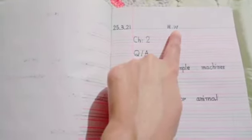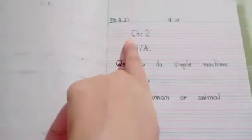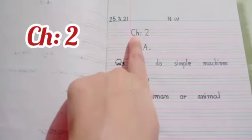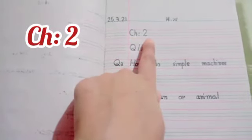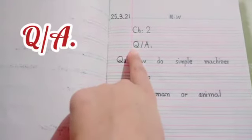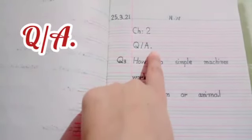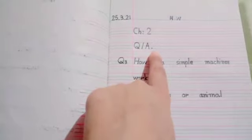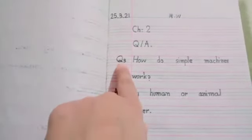Write Chapter (C-H-A-P-T-E-R) 2. Chapter 2. And in the next line, write Q/A and then put your full stop.